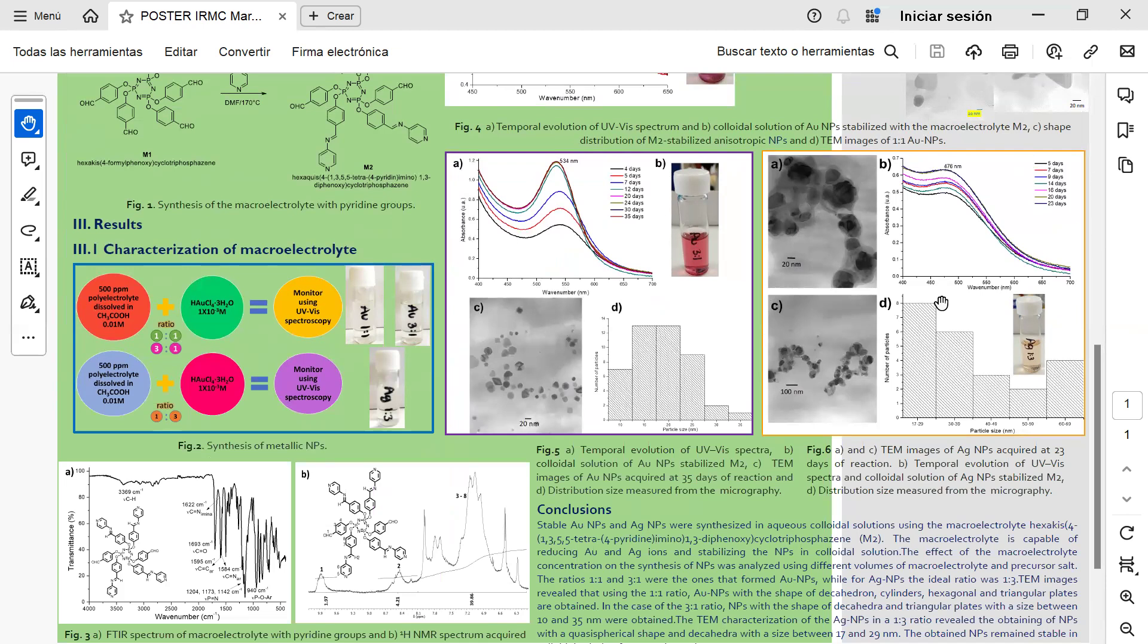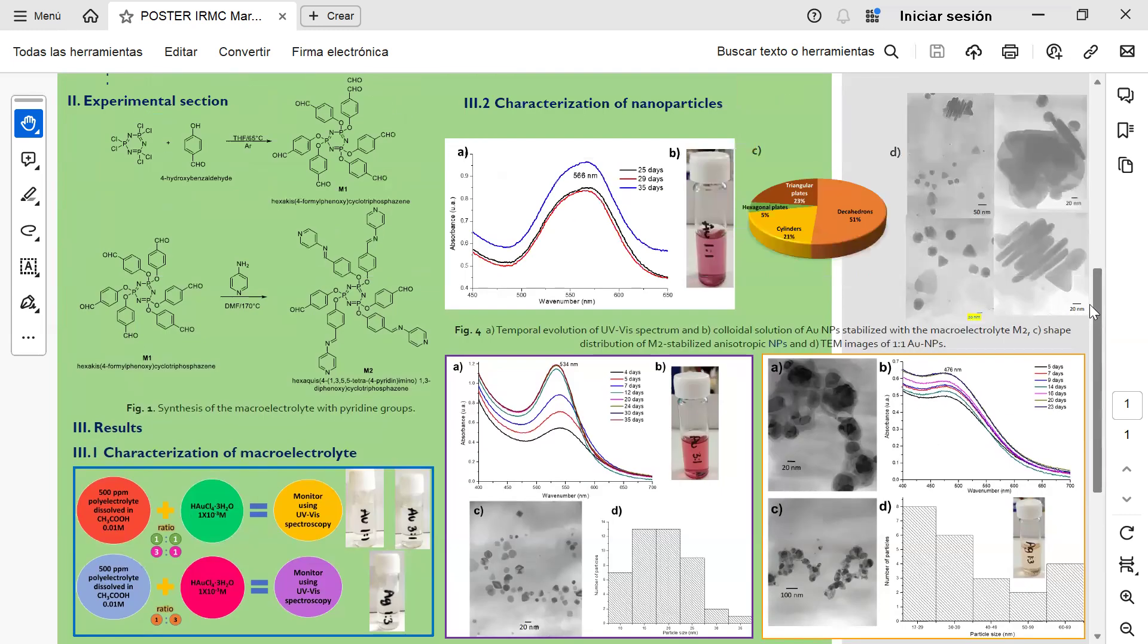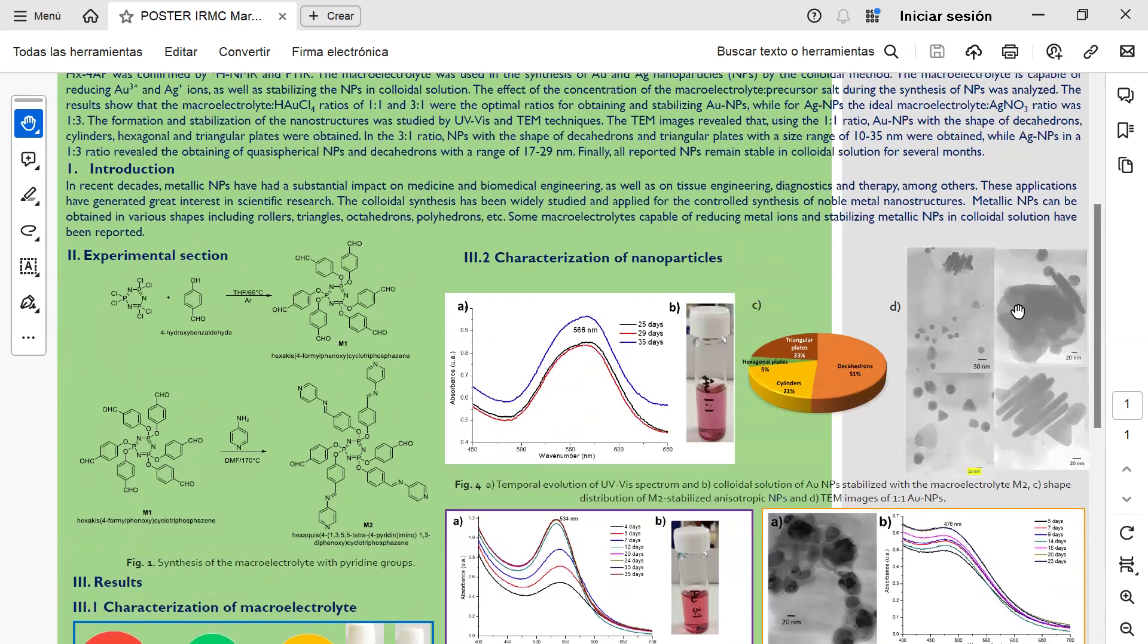TEM imaging revealed that using the 1:1 ratio, gold nanoparticles with the shape of decahedron, cylinders, hexagonal, and triangular plates are obtained.